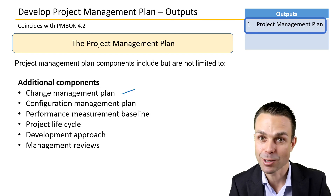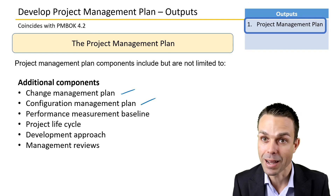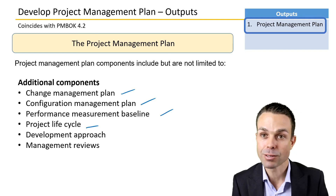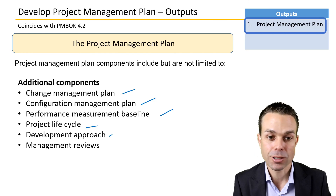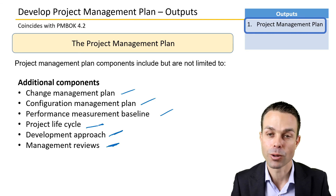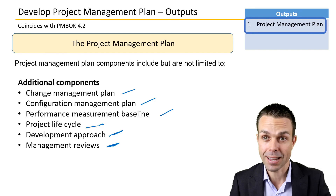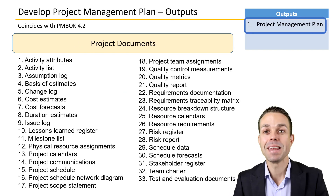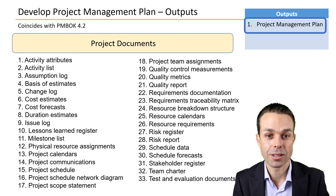Additional components that might go into the project management plan include the change management plan, configuration management plan — which documents will be baselined — the performance measurement baseline, the project life cycle (whether agile or waterfall), the development approach, and management reviews covering how we review different milestones to make sure we're getting what we want as the project progresses.